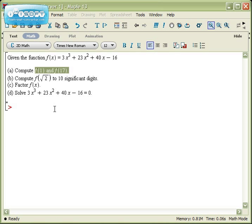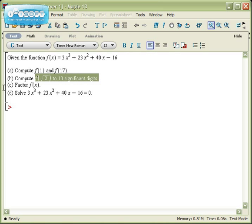Suppose you need to compute f(1) and f(17), compute f(√2) to 10 significant digits, factor the function f(x), and solve the function set equal to 0.